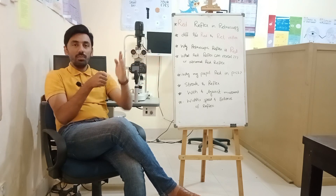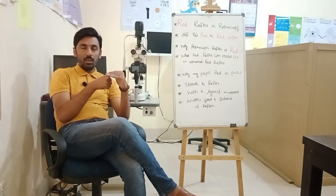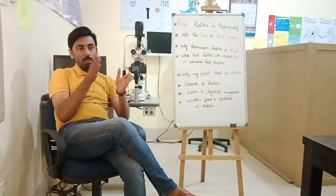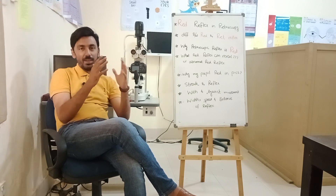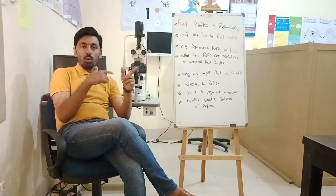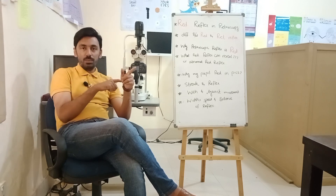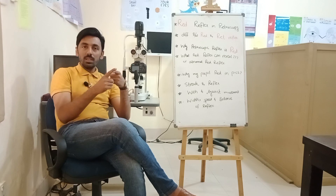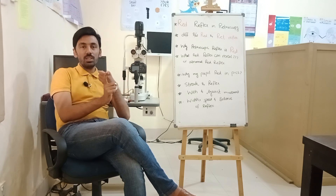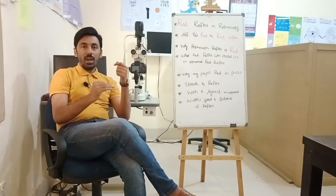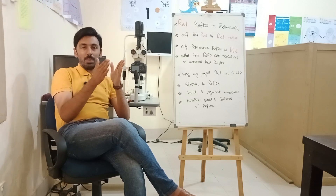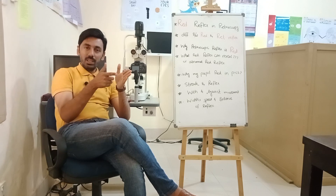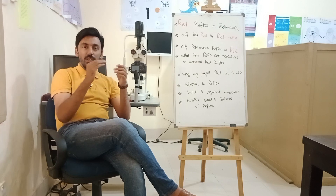Regarding brilliance: if the reflex observed in the pupil is bright and shiny, it indicates the refractive error of the patient is low. If the brilliance of the reflex is dull and low, it indicates the refractive error of the patient is higher.